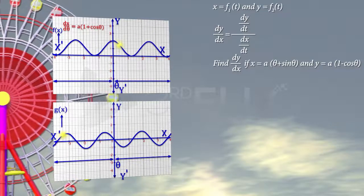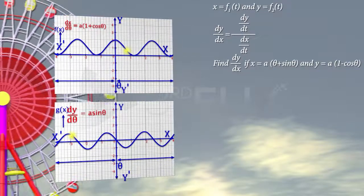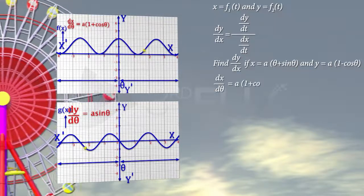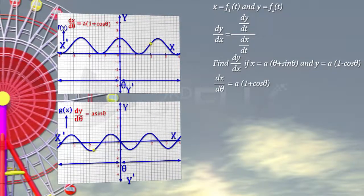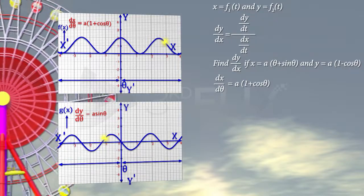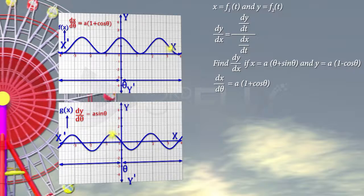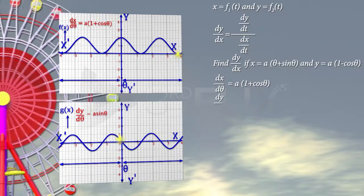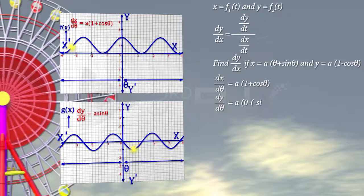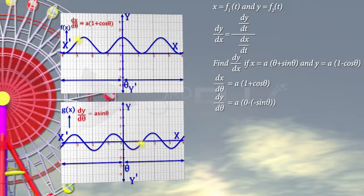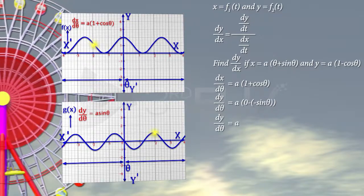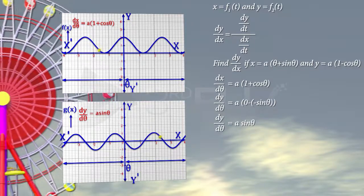Differentiating x with respect to θ, we get dx/dθ = a(1 + cosθ). Differentiating y with respect to θ, we get dy/dθ = a(0 − (−sinθ)), that is, dy/dθ = a·sinθ.